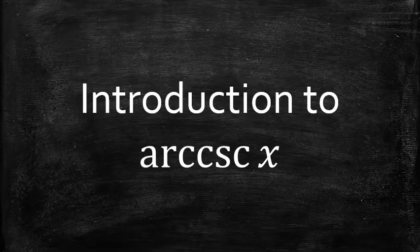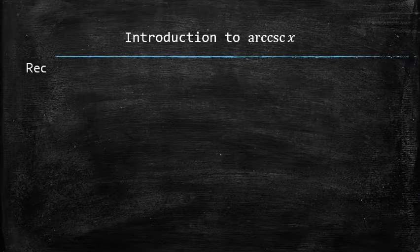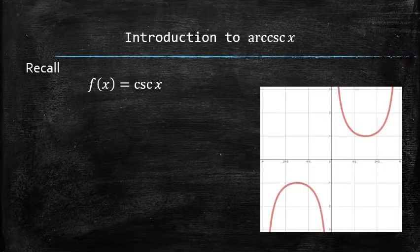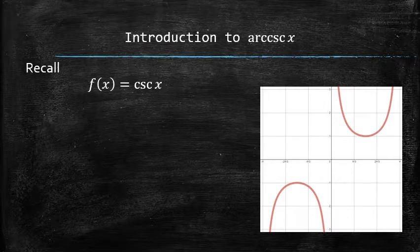Next, we will introduce a new function called the arc-cosecant. Let's recall the cosecant of x function and its graph, and let's answer the following questions.